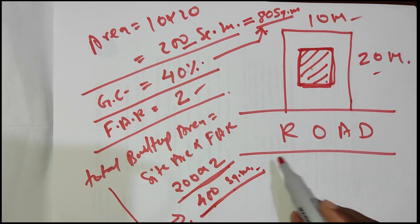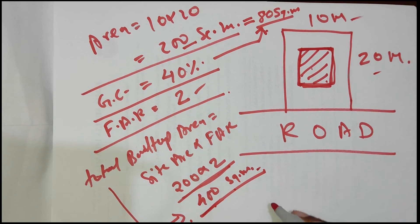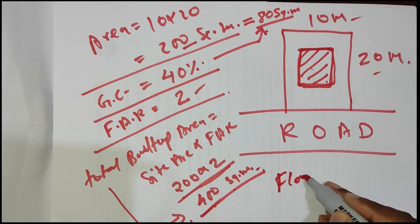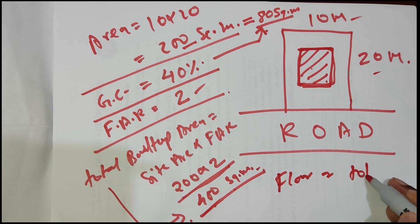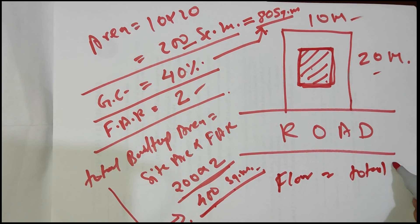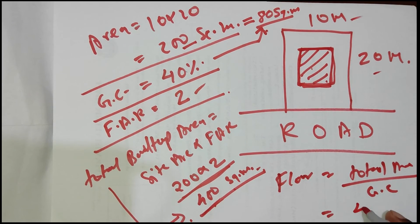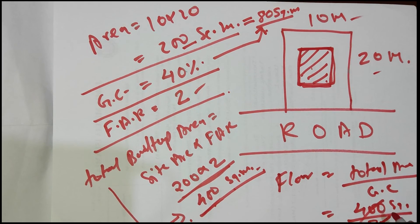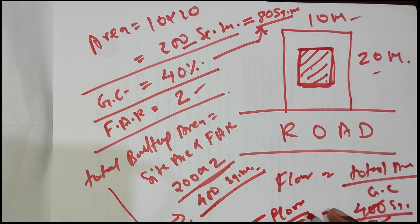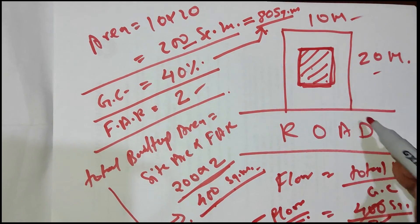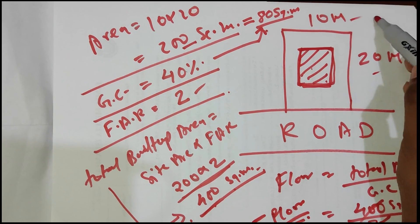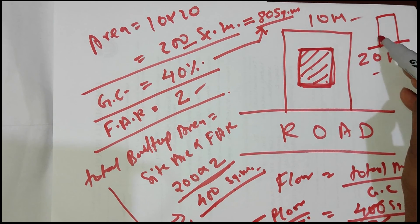Now coming to the number of floors: floors equals total built-up area divided by GC. In our case, the total built-up area is 400 square meters divided by 80, which equals 5 floors. So in this site, the maximum number of floors that we can consider is 5 floors.